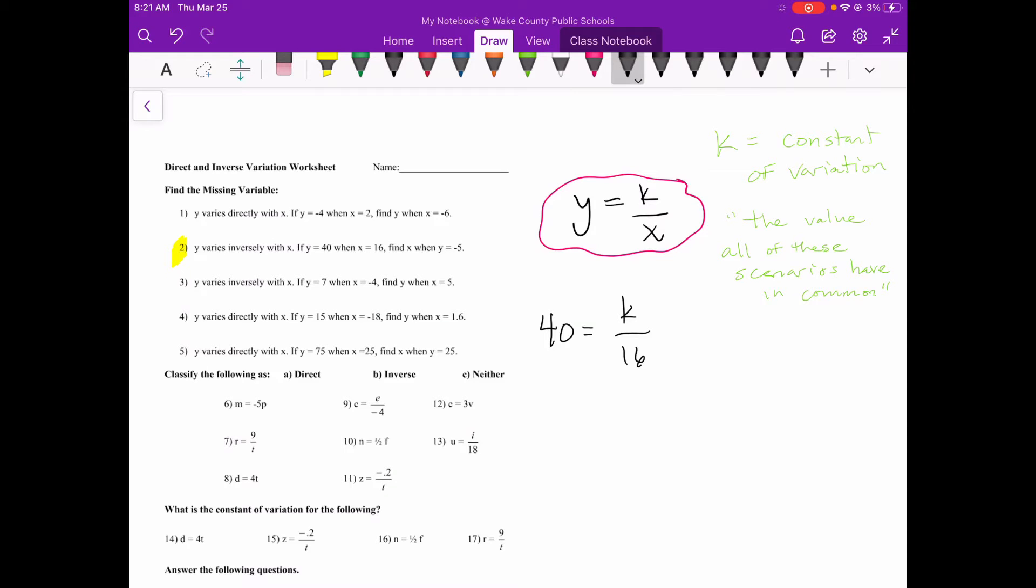So I'm just going to make this 40 over one because that's an equivalent expression. And what that now gives me is a proportion, a fraction equal to a fraction. So now I can cross multiply to help me solve. 40 times 16 is going to be equal to k times one. So 40 times 16 is 640 and k times one is k. So now in any scenario that I come up with for y and x, the k value is going to be 640. So I'm just going to use that. And now I went from three variables down to just two variables.